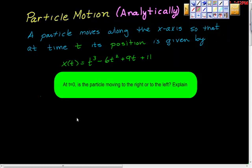So now we'll just apply calculus here. A particle moves along the x-axis, so we have horizontal movement, so that at time t, its position is given by this function here, and this is the position function. So the position of our particle at time t is given by t cubed minus 6t squared plus 9t plus 11. And the first question is,